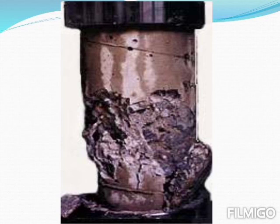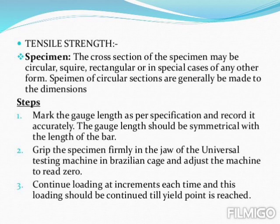We can see what happens due to the effect of the external load applied on the specimen. To perform a tensile strength test on a UTM, the cross section of the specimen may be circular, square, rectangular, or in special cases any other form. The specimen should be of circular section and made to specific dimensions.